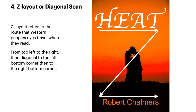The Z layout refers to the route that western people's eyes travel when they read: left to right, top to bottom, then diagonal to the left bottom corner, then to the right bottom corner. That's how you look at things naturally, and this has been scientifically proven. If your elements follow that grouping, you're in the right place. You can experiment with this by reversing images or putting elements where they don't belong — and you can see that they just don't fit; it feels wrong.